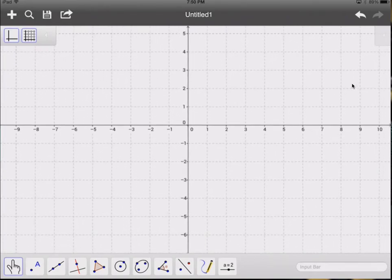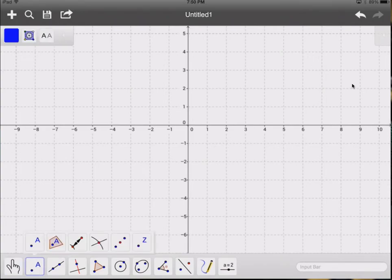And so the new tool that I want to show you is this point tool. It's the second button down in the lower left with the letter A there and the dot. And if you select it, and we're going to choose the first tool there, which is just the A and the dot, this allows you to use your finger to plot some points.